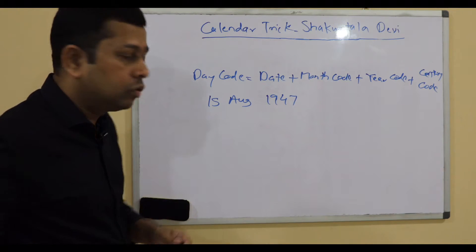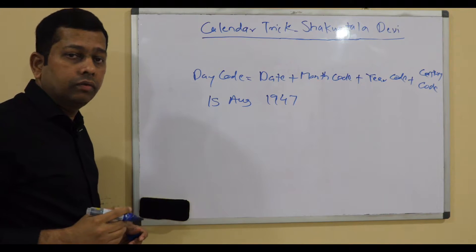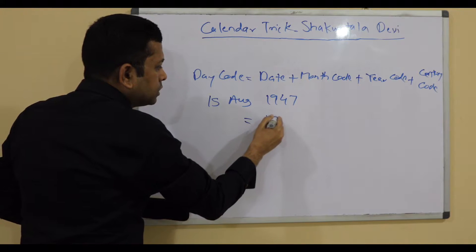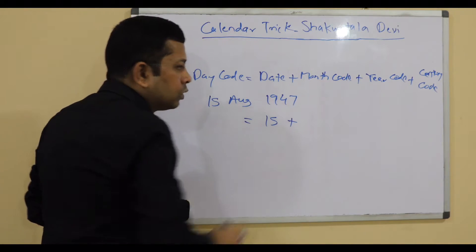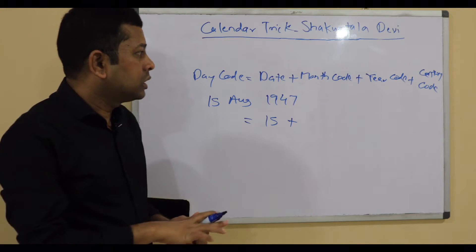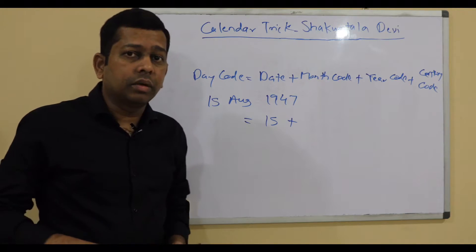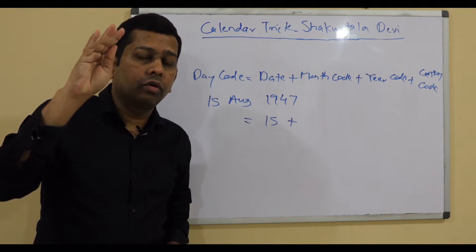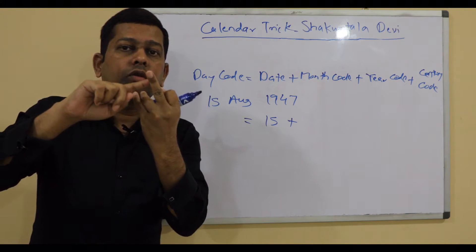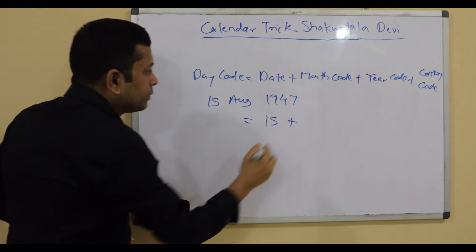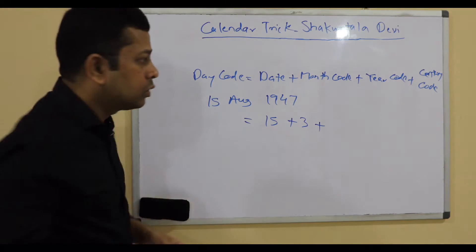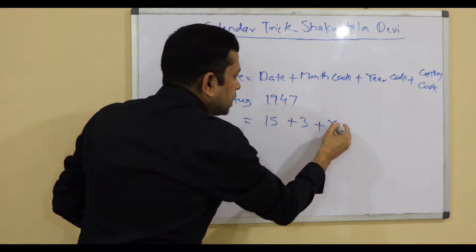Let's find out what day it was on 15th August 1947. The formula says: day code = date, which is 15, plus the month code. August is the 8th month — remembering 1, 4, 4, 0, 2, 5, 0, 3 — the code for August is 3. So we have 15 + 3, plus year code, plus century code.